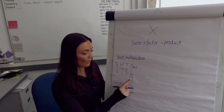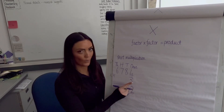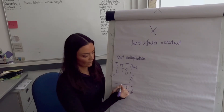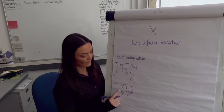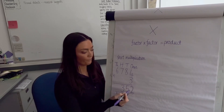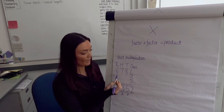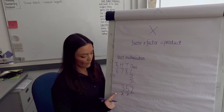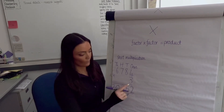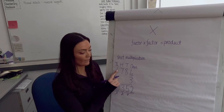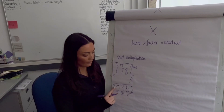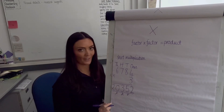Then 3 multiplied by 700, or 3 times 7, equals 21, plus the 2 underneath equals 23 hundreds — that's 2 thousands and 3 hundreds. Then 3 multiplied by 6 thousands: 3 times 6 equals 18, plus the 2 underneath equals 20,000. Everything is exchanged and in the correct columns.